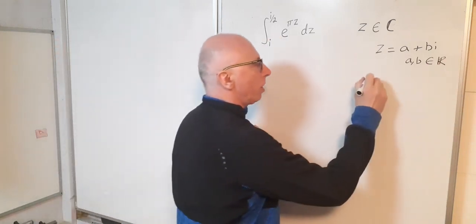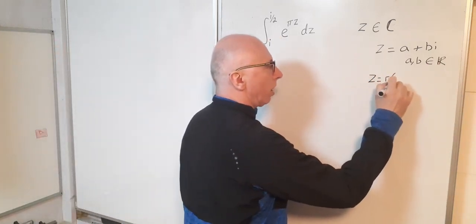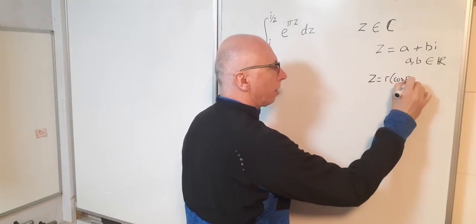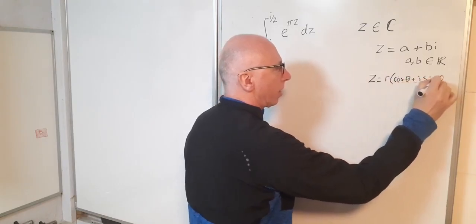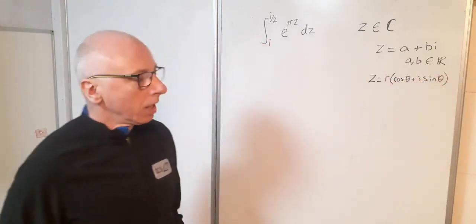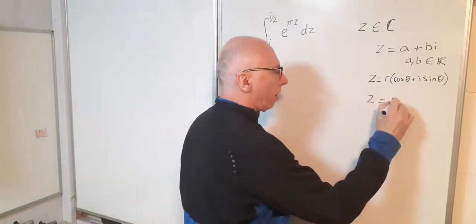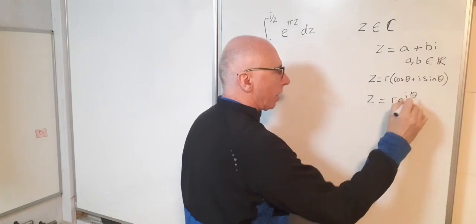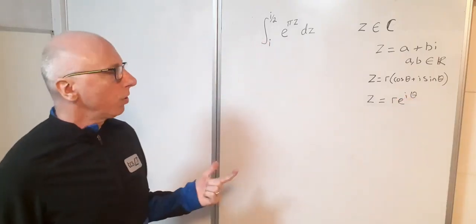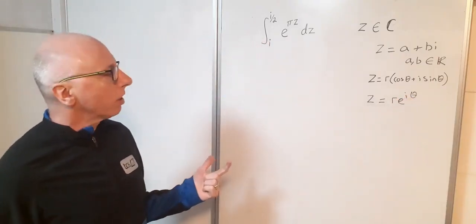Another way is in polar form where z equals r cosine theta plus i sine theta. Then the other way is in exponential form where z equals r e to the i theta, that's one of the ways we can represent our complex numbers.